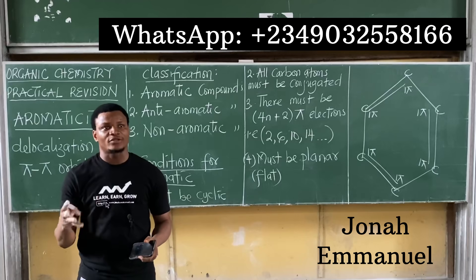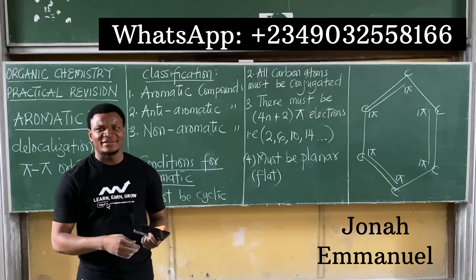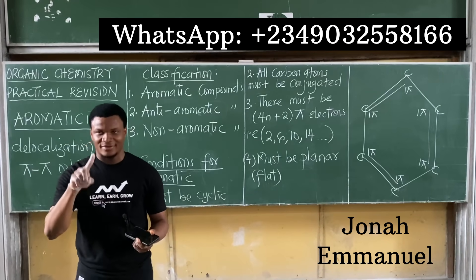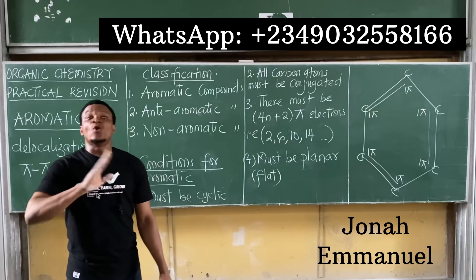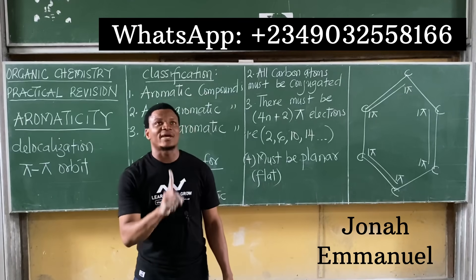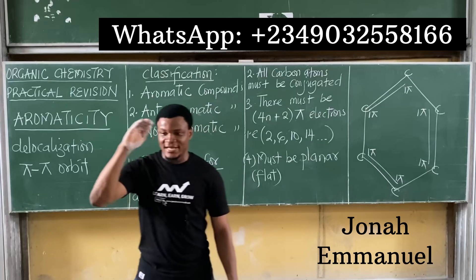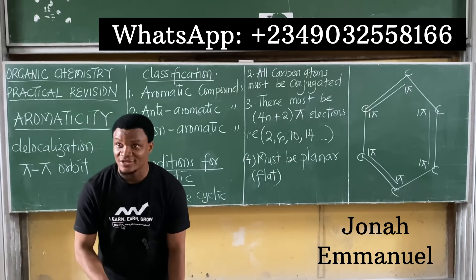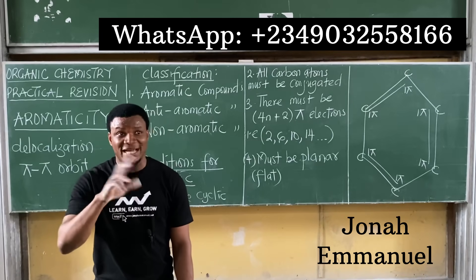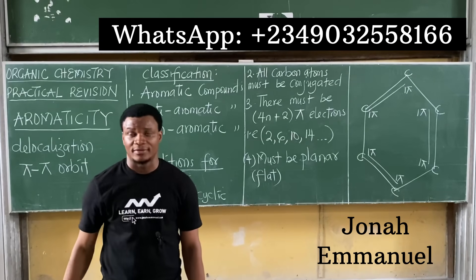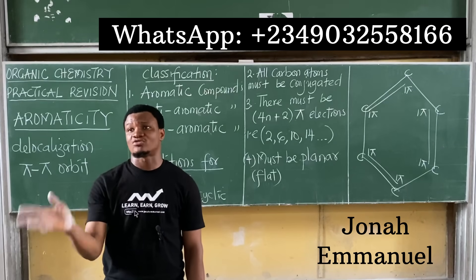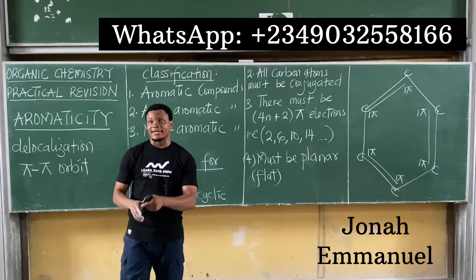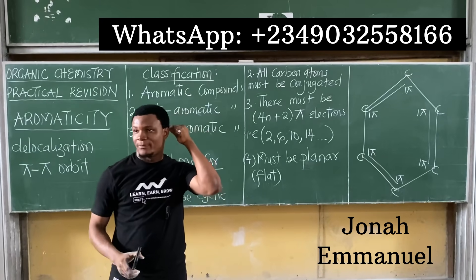Seven and below is always planar. Note: eight and above can be either planar or non-planar, but don't stress about that for now. Just remember: seven and below is always planar. So benzene meets all four conditions — hence, benzene is an aromatic compound.